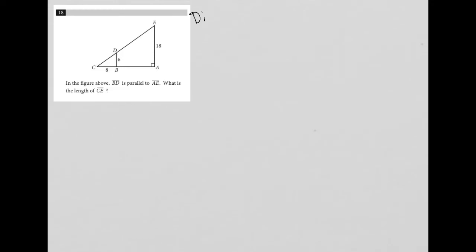This is a diagram question. I call it a diagram question because any question that provides some visual input — whether it's a graph, a table, a chart, or a shape — I am looking first and foremost to label the diagram with any additional information provided by the question. Once I've labeled it with everything I can, then typically finding the answer is not so difficult.